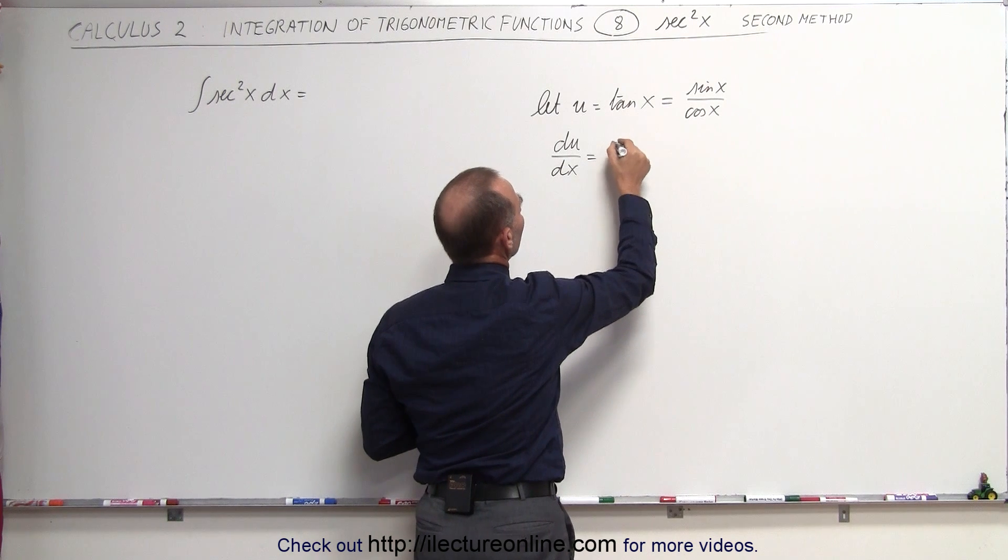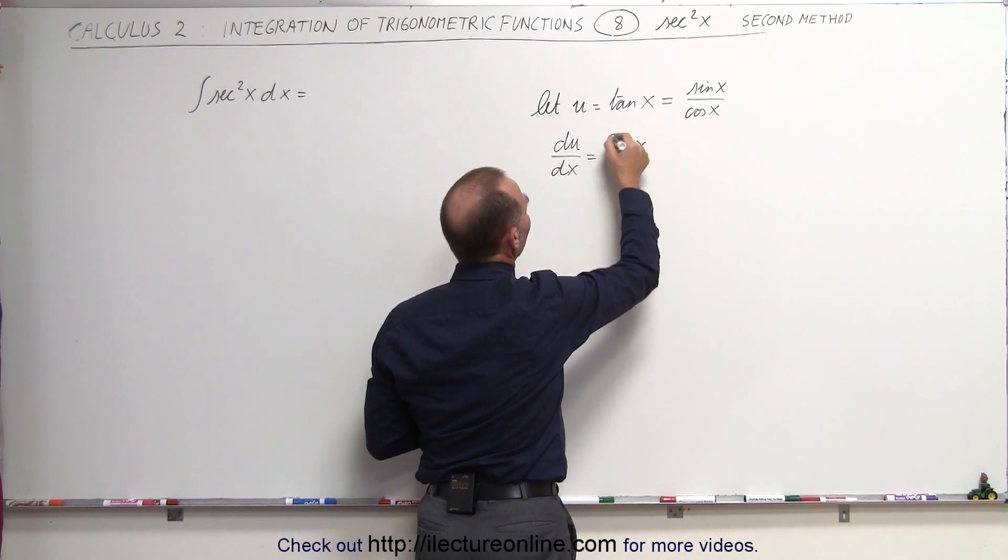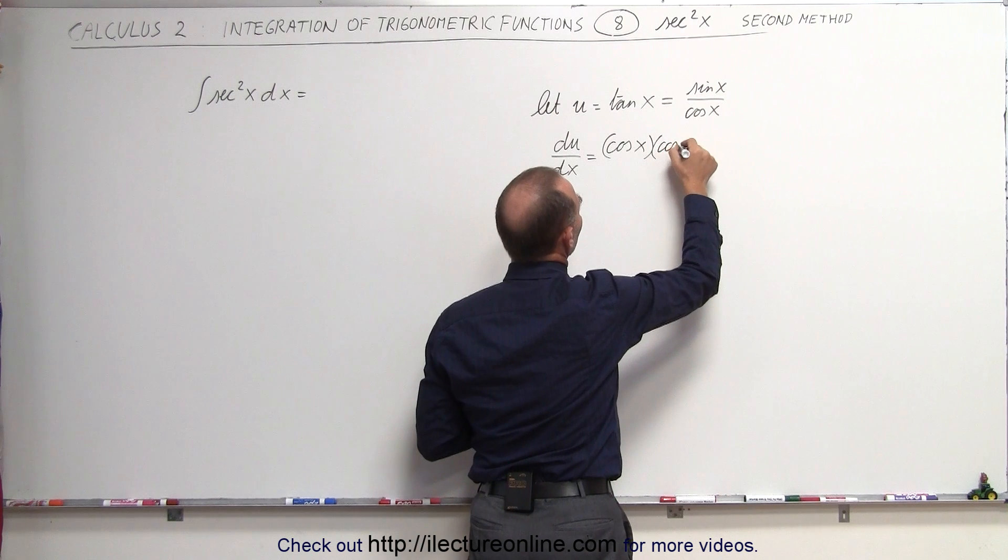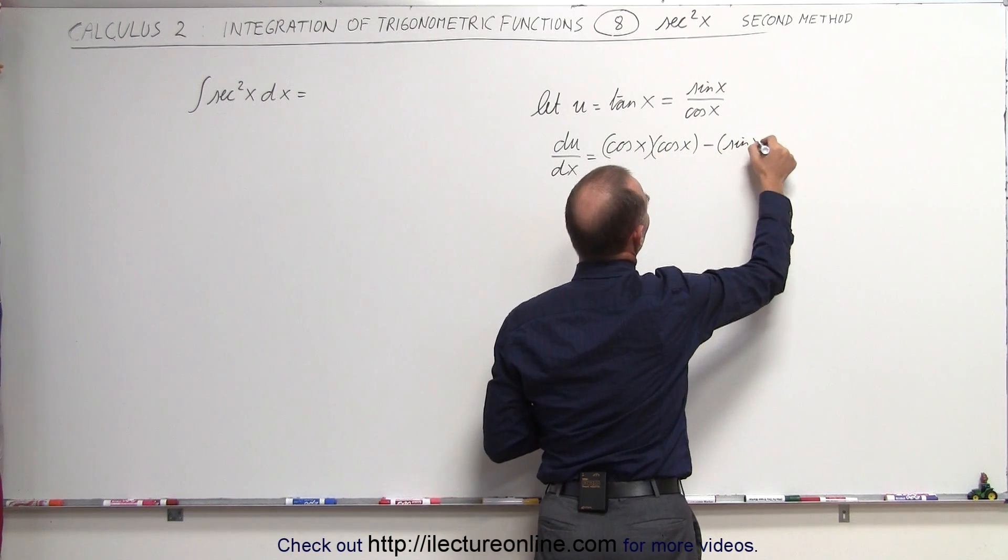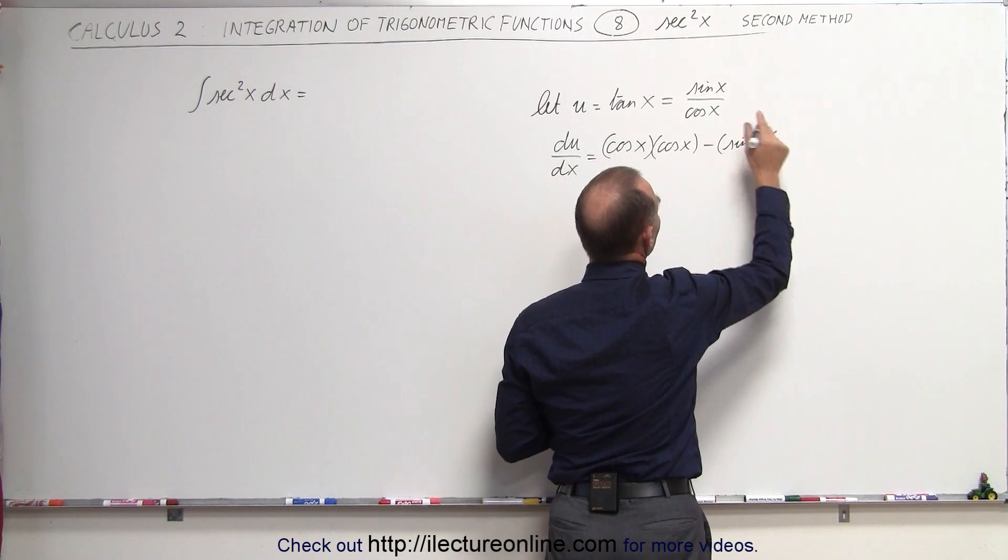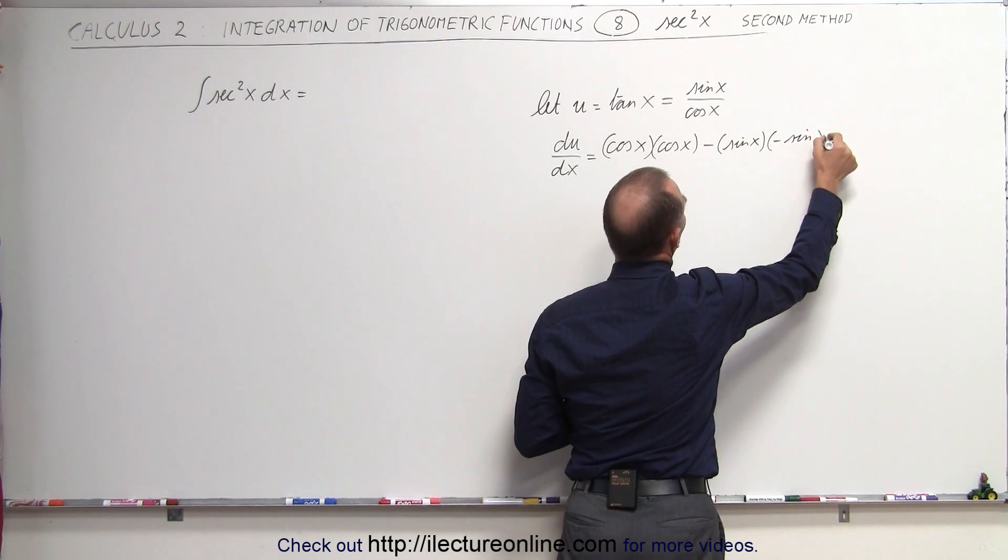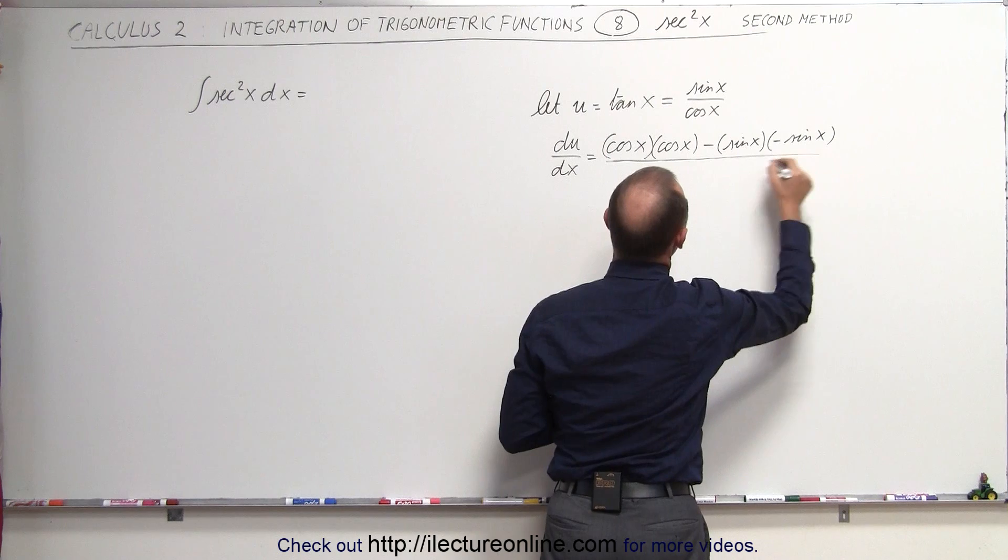that would be equal to the denominator, cosine of x, times the derivative of the numerator, which is the cosine of x, minus the numerator, which is the sine of x, times the derivative of the denominator, which is the minus sine of x, all divided by the denominator squared.